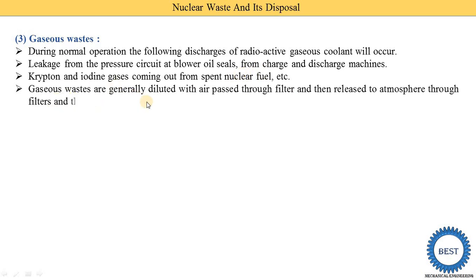Gaseous waste is generally diluted with air, passed through filters, and then released to the atmosphere through a large chimney. The gaseous waste coming out from the plant is diluted with large quantities of air, passed through filters, and from the filters the gases are supplied to the atmosphere via chimney.